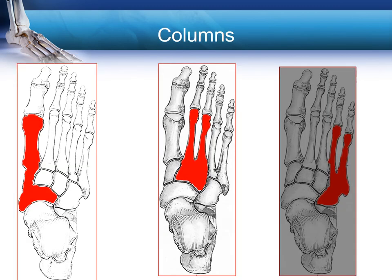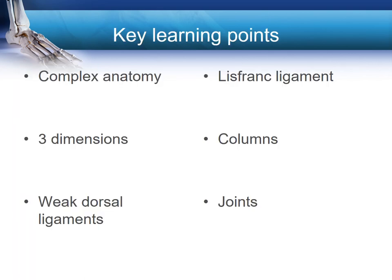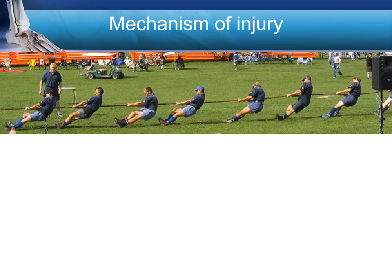The midfoot is often considered in columns — either two or three. In a three-column model, the medial column is made up of the navicular, medial cuneiform, and first metatarsal; the middle column is made up of the second and third metatarsals and their respective cuneiforms; and the lateral column is made up of the fourth and fifth metatarsals with the cuboid. Lisfranc's ligament bonds the middle column to the medial column, holding the second metatarsal firmly against the medial cuneiform. The dorsal ligaments are much weaker than the plantar ligaments.